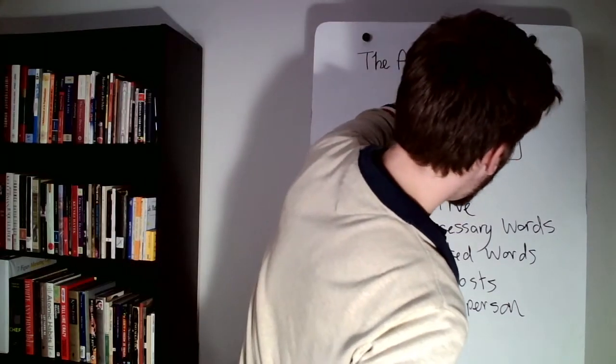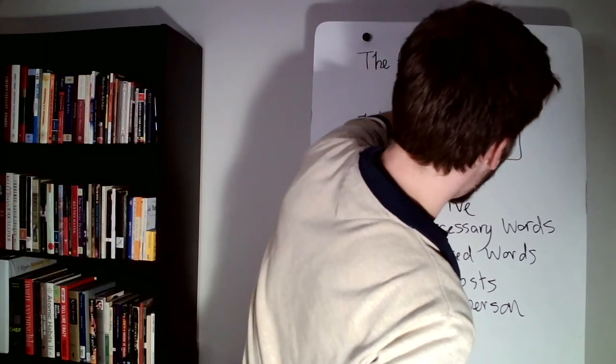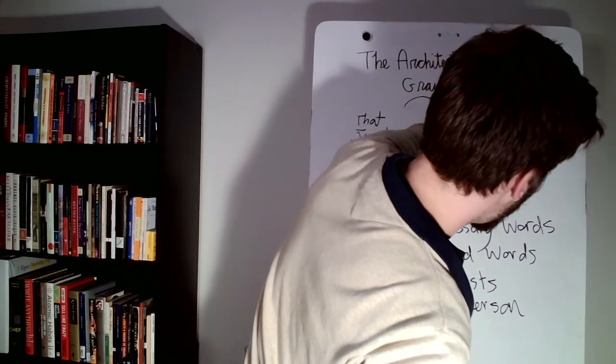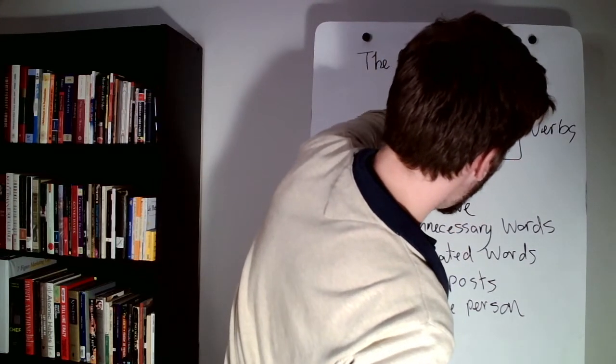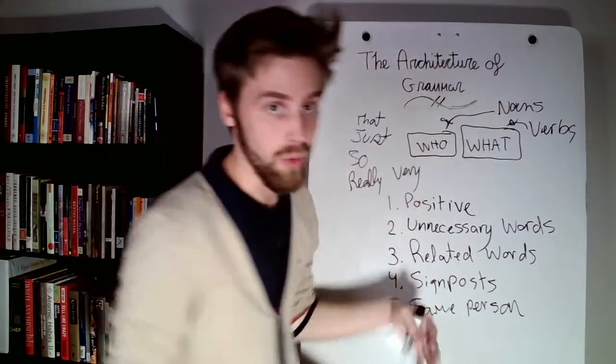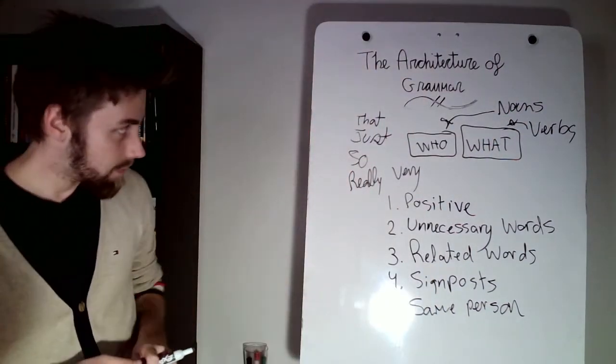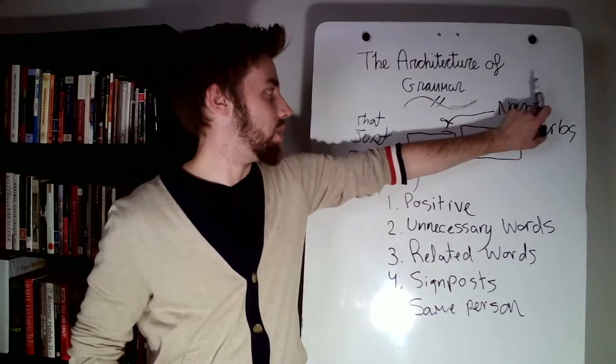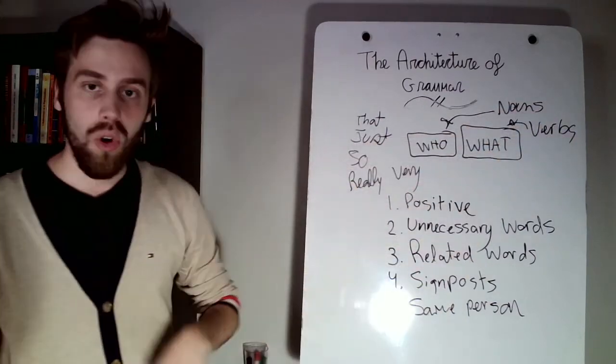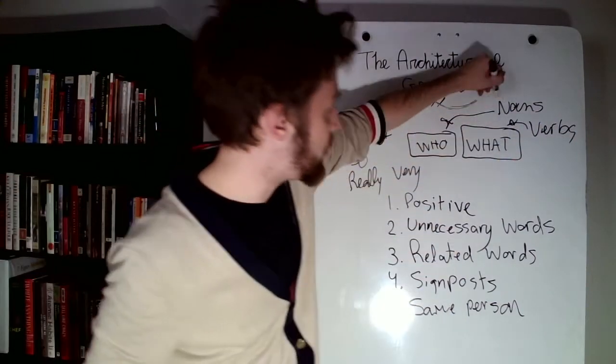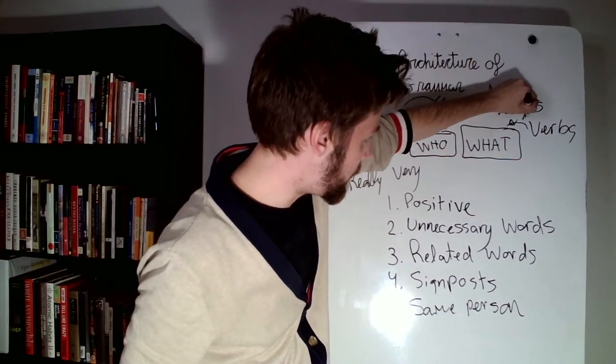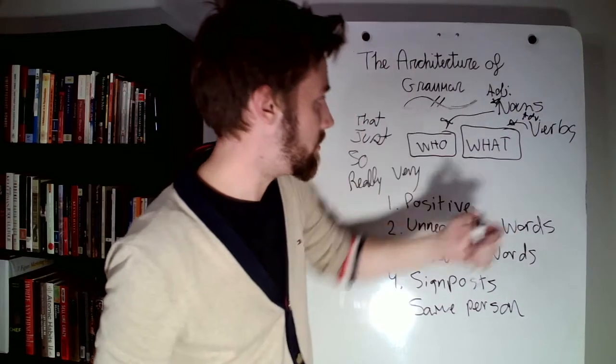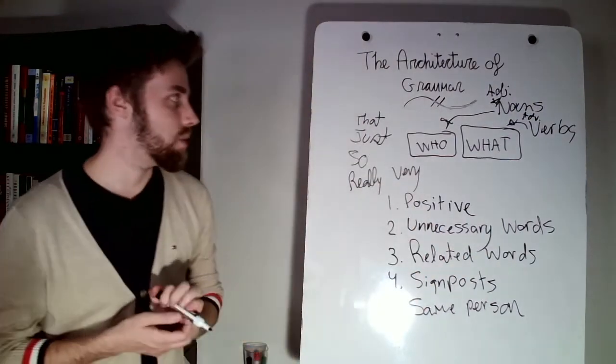You have two very important types of words, parts of speech. You have nouns, and you have verbs. So nouns tend to be the who, verbs are always the what. It's the action. If you use very strong nouns and very strong verbs, then you don't need to use all kinds of useless words like adjectives, which modify nouns, and adverbs that modify verbs.